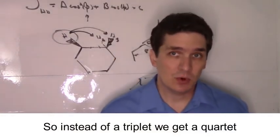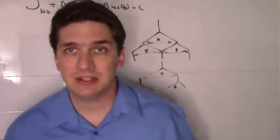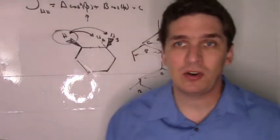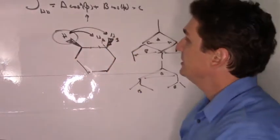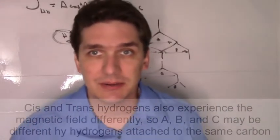It gets even more complicated than this because A, B, and C are also different now—these hydrogens experience the magnetic fields differently because they're on opposite sides of the ring.